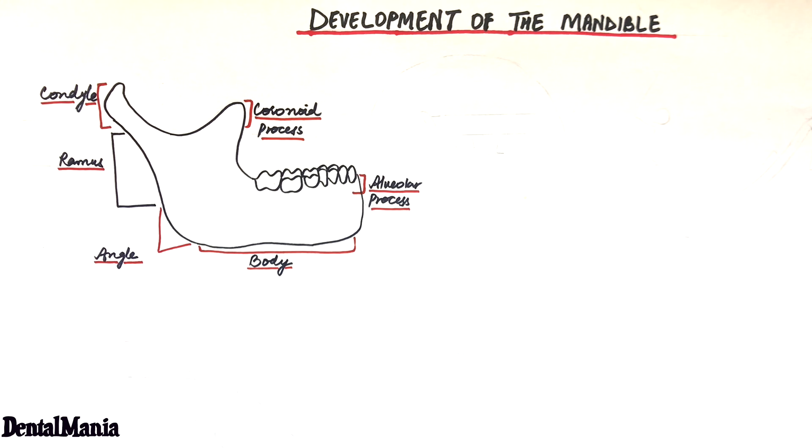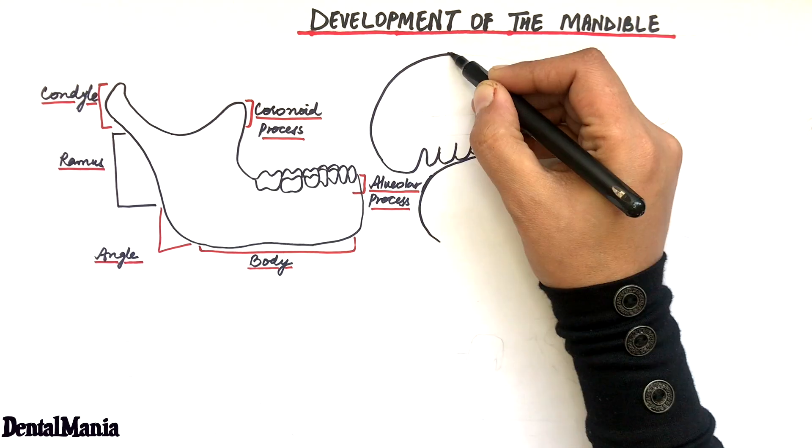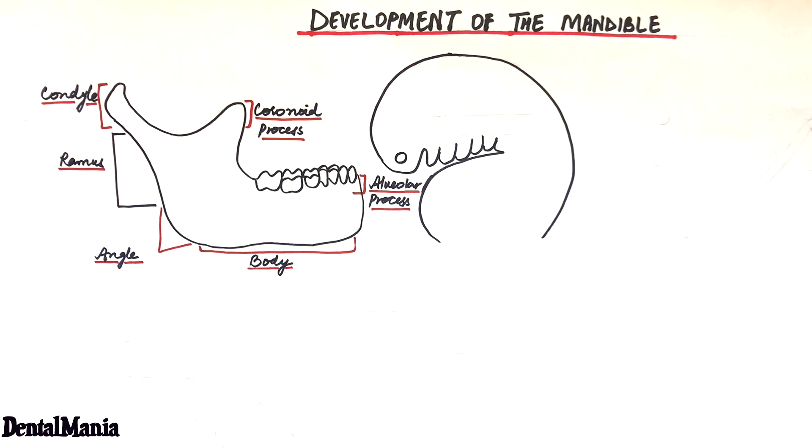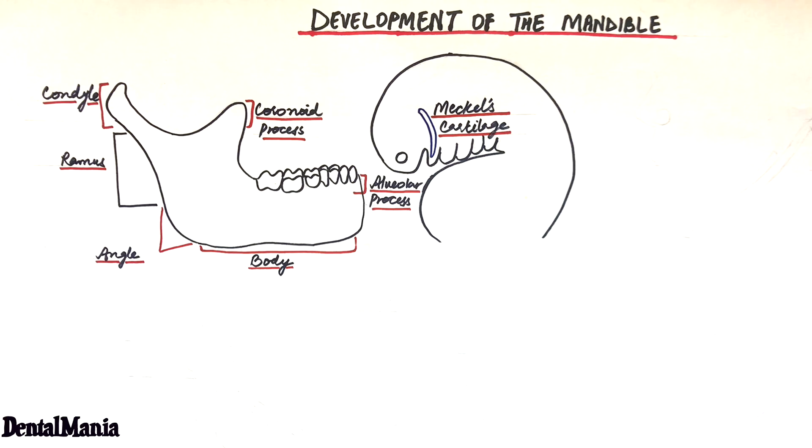As it's a lateral view, these processes are present on the contralateral sides too. Let's see where the development of the mandible essentially begins from. The mandible develops from the first pharyngeal arch with the help of the cartilage of the first arch called the Meckel's cartilage.